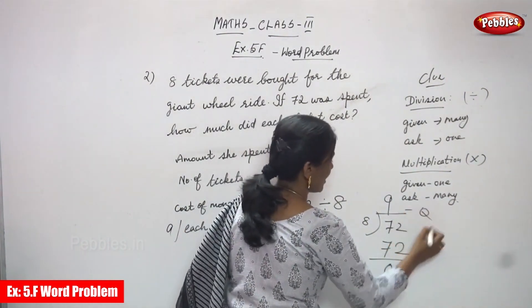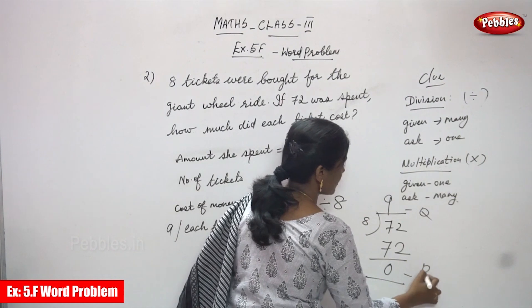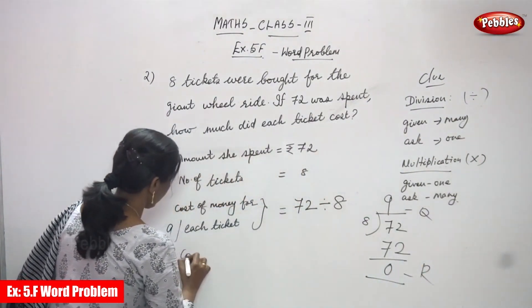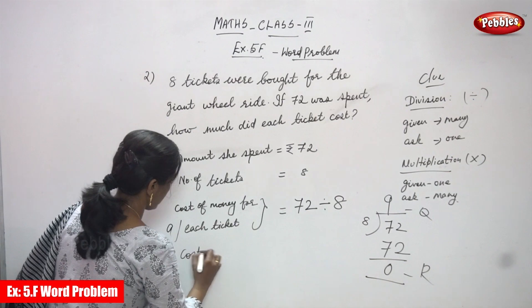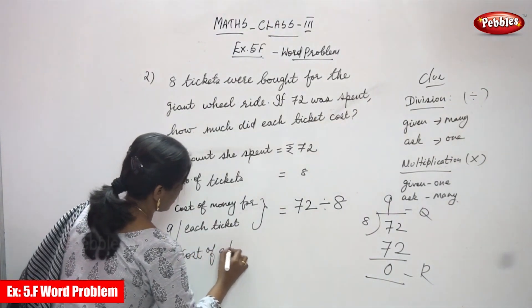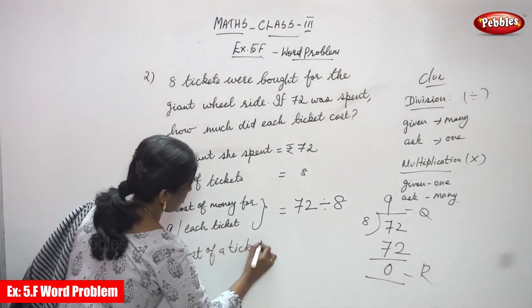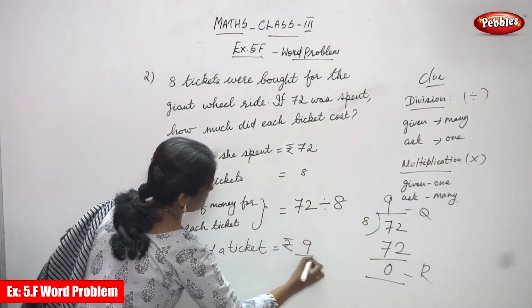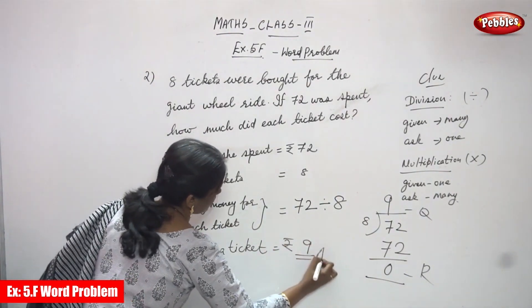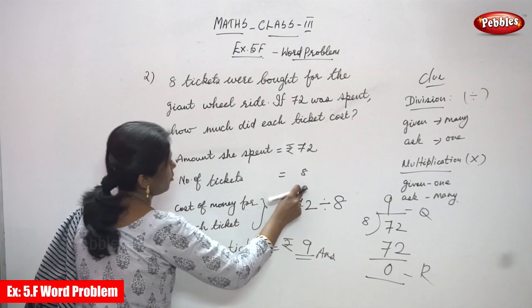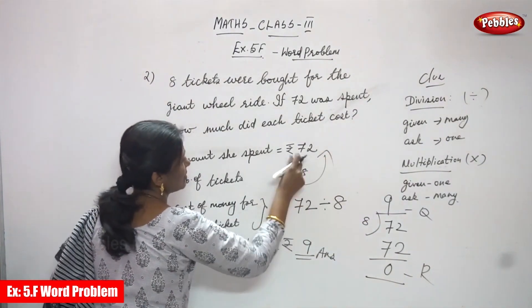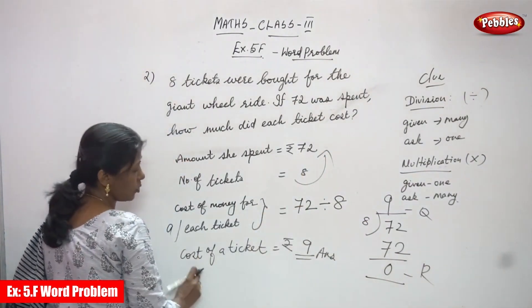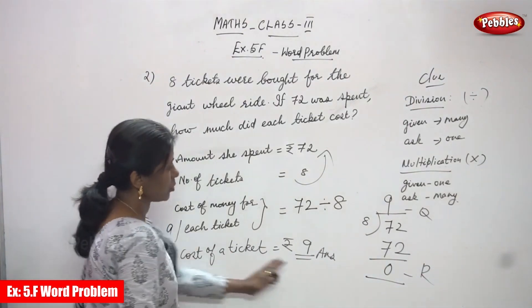So the quotient is 9 and the remainder is 0. This is the cost of a ticket — rupees 9. Cost of 8 tickets is 72, and now we have found that cost of each ticket is rupees 9.